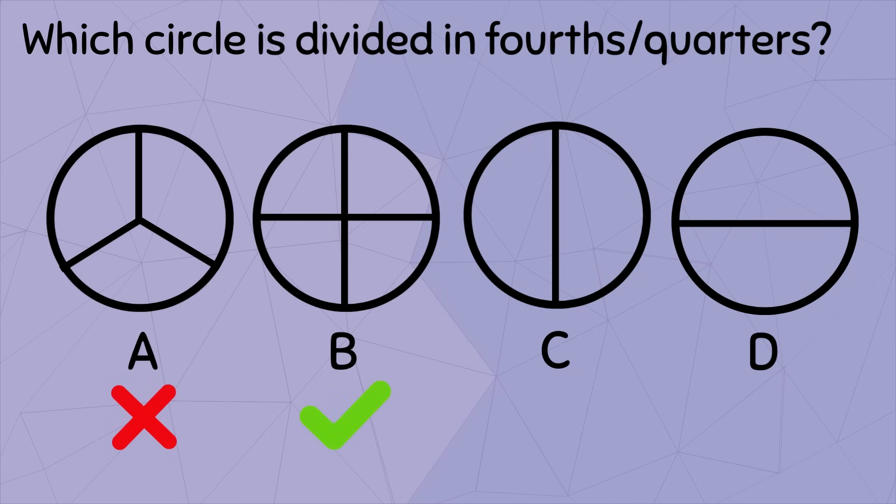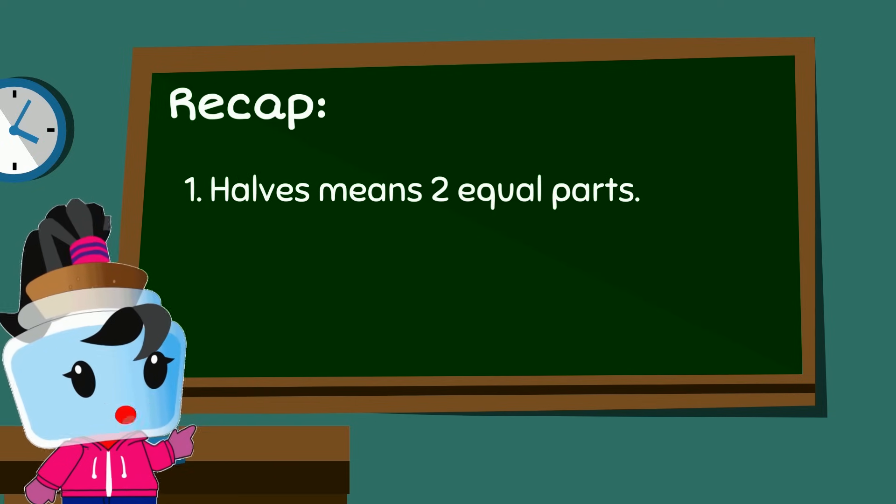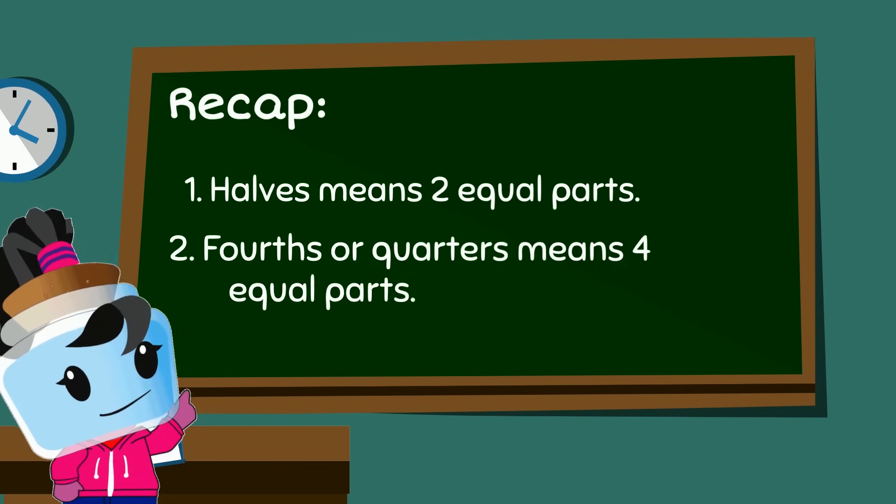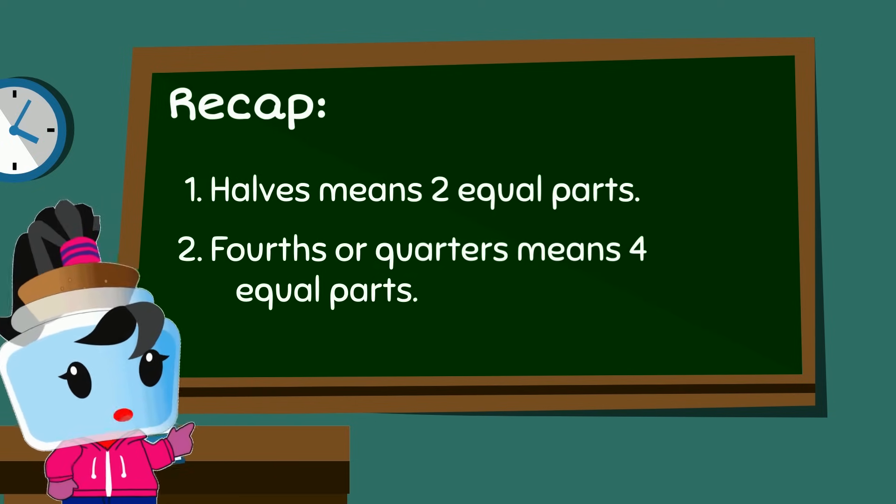The other two circles are divided in two equal parts. So they're actually divided in halves. Again, halves mean two equal parts, while fourths or quarters mean four equal parts.